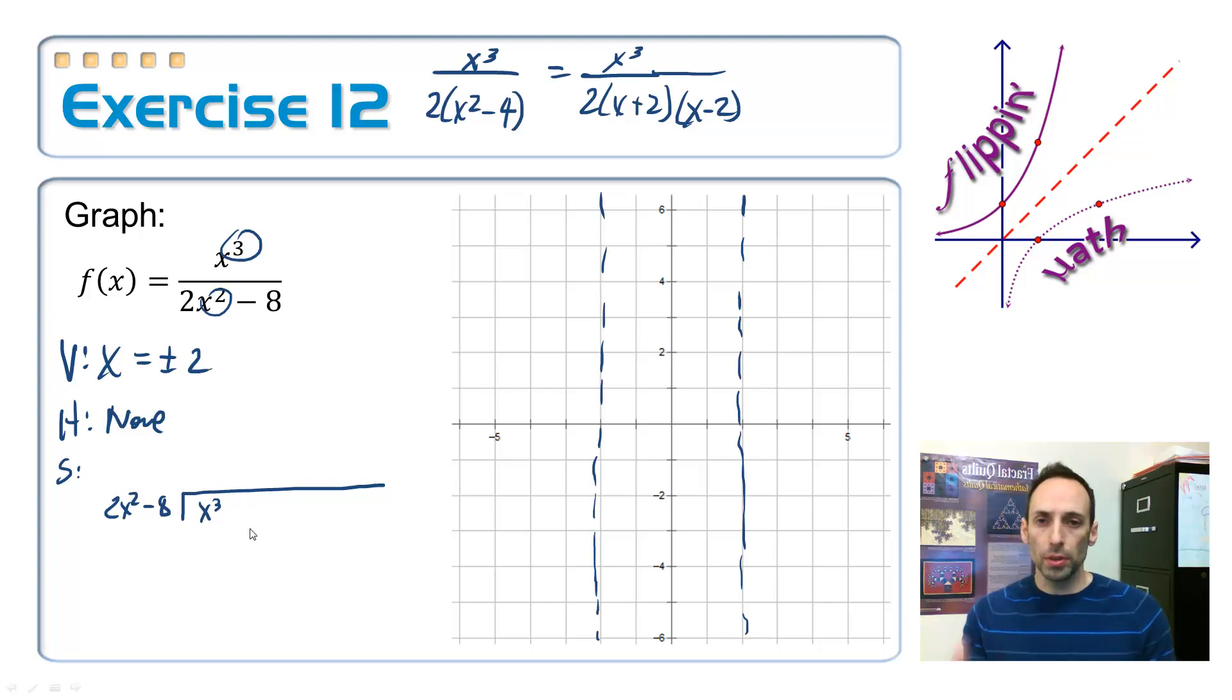So, I'm going to have to put in some placeholders here. So, plus 0x squared, plus 0x, plus 0. Okay. How many times does 2x squared go into x cubed? None. That's not true. It goes in there 1 half x times. Because 1 half times 2 makes that 1. And then x times x squared makes x cubed. And then half x times negative 8 makes negative 4x minus 4x.